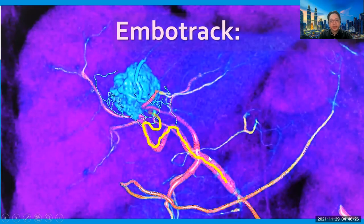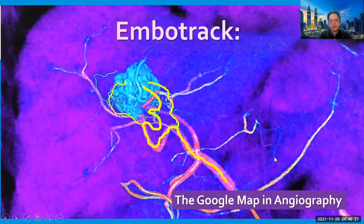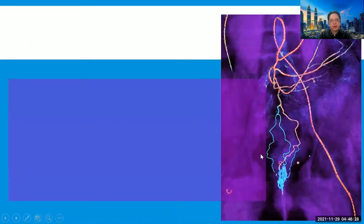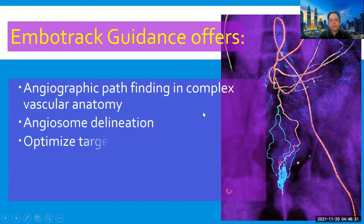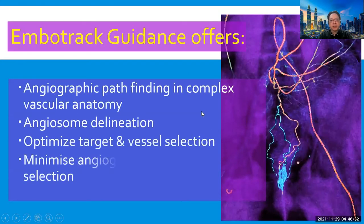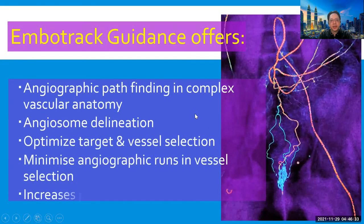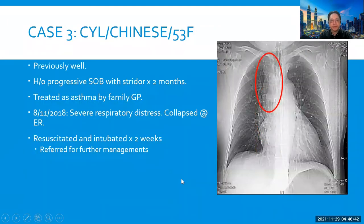EmbolTrack — the angiographic Google Maps — offers many advantages: angiographic pathfinding in complex vascular anatomies, radiation dose reduction, optimized target and vessel selection in one angiographic run, and increased procedural safety.